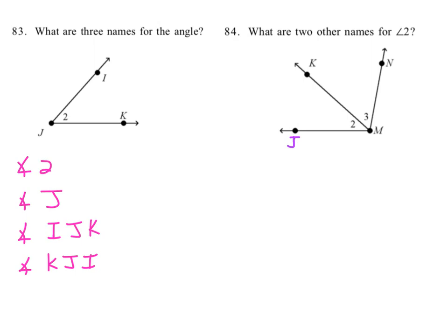Then we could say, okay, then it would be angle JMK, coming from here through the vertex point for angle 2 and back out the other ray.